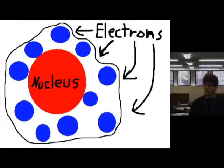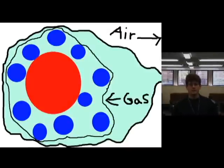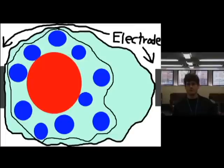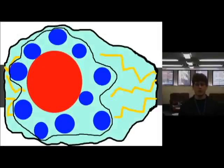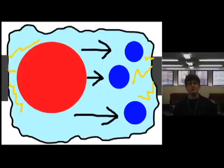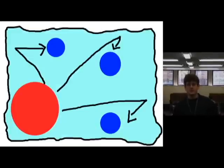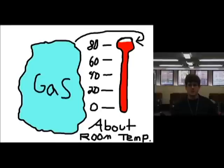It starts off with atoms and electrons. You put a gas in a containment chamber and suck the air out. After this, you put in the electrodes and start running electricity through them. After that, the electrons get ripped away from their atoms. As they speed up, the gas begins to heat up, until the point where you actually get a plasma. Plasmas are usually bright and colorful, like in these pictures.